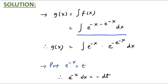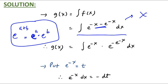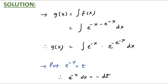Let us solve: the integral of f(x) is the integral of e raised to (minus x minus e raised to minus x) dx, but you cannot solve this directly. You have to think of simplification. The power is (minus x minus e raised to minus x), so I can split using e raised to (a plus b) equals e raised to a times e raised to b. This gives the integral of e raised to minus x times e raised to minus(e raised to minus x) dx. Now think of substitution.